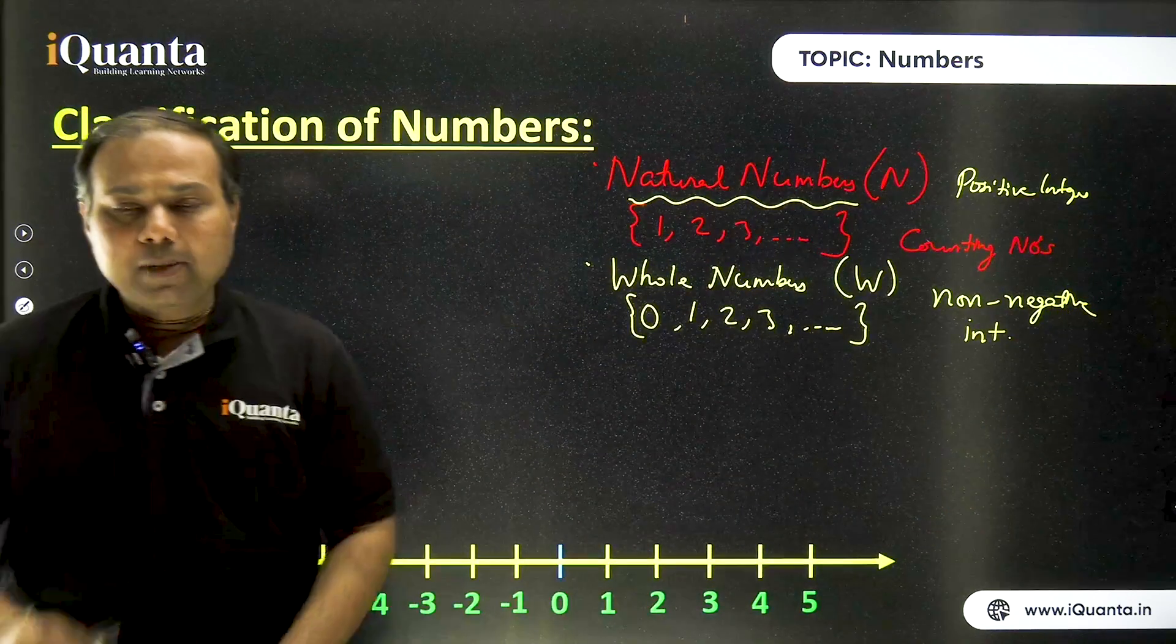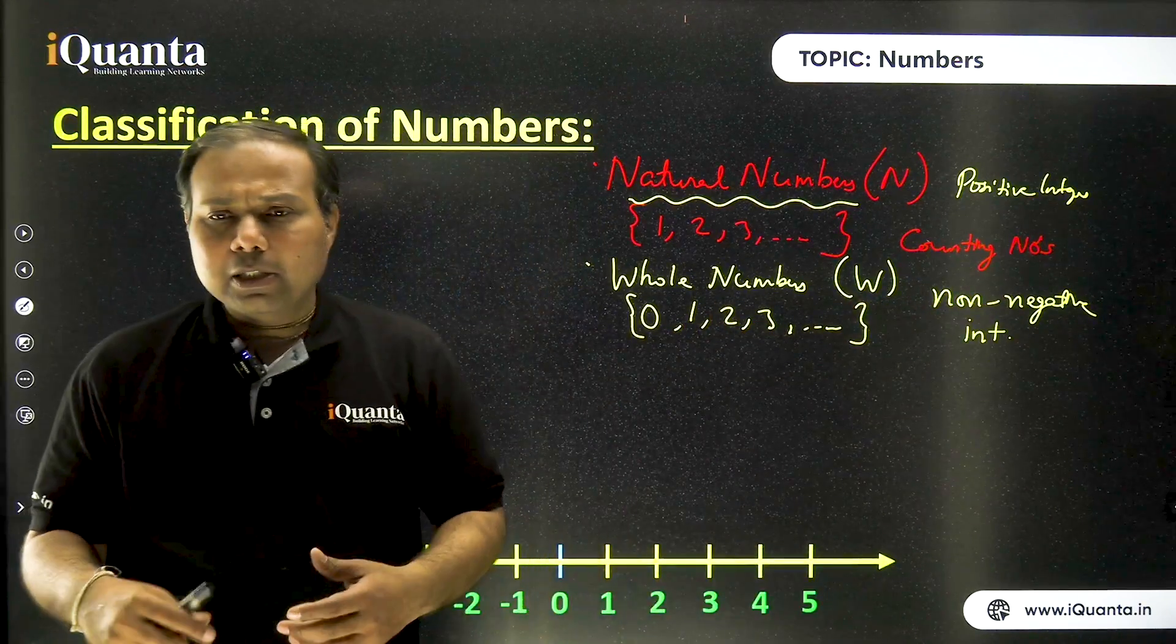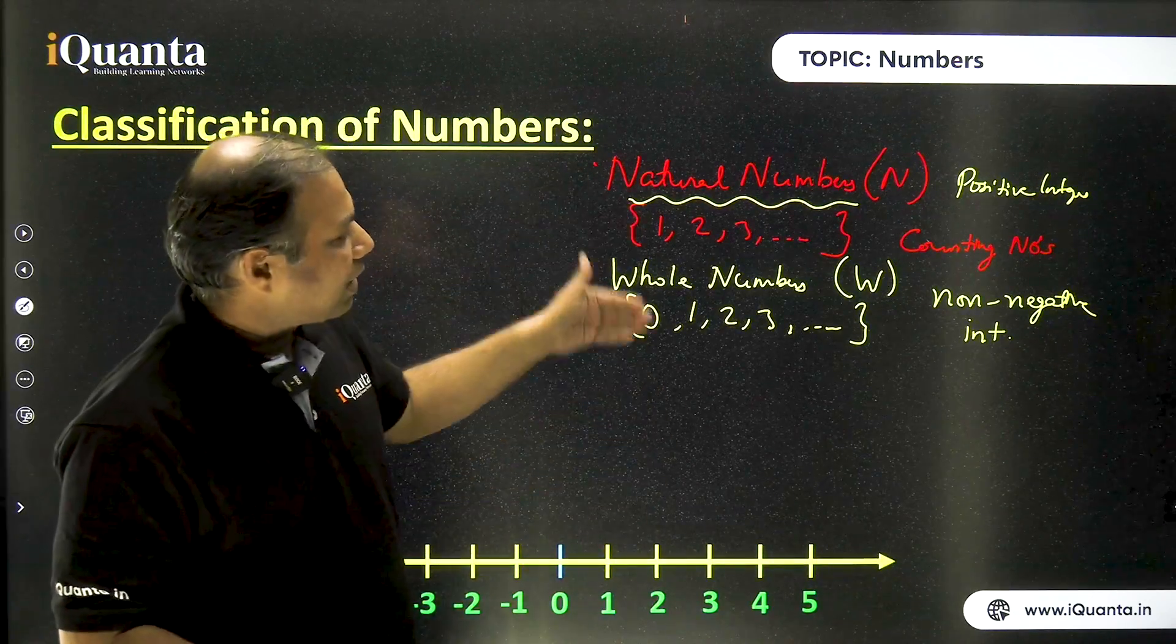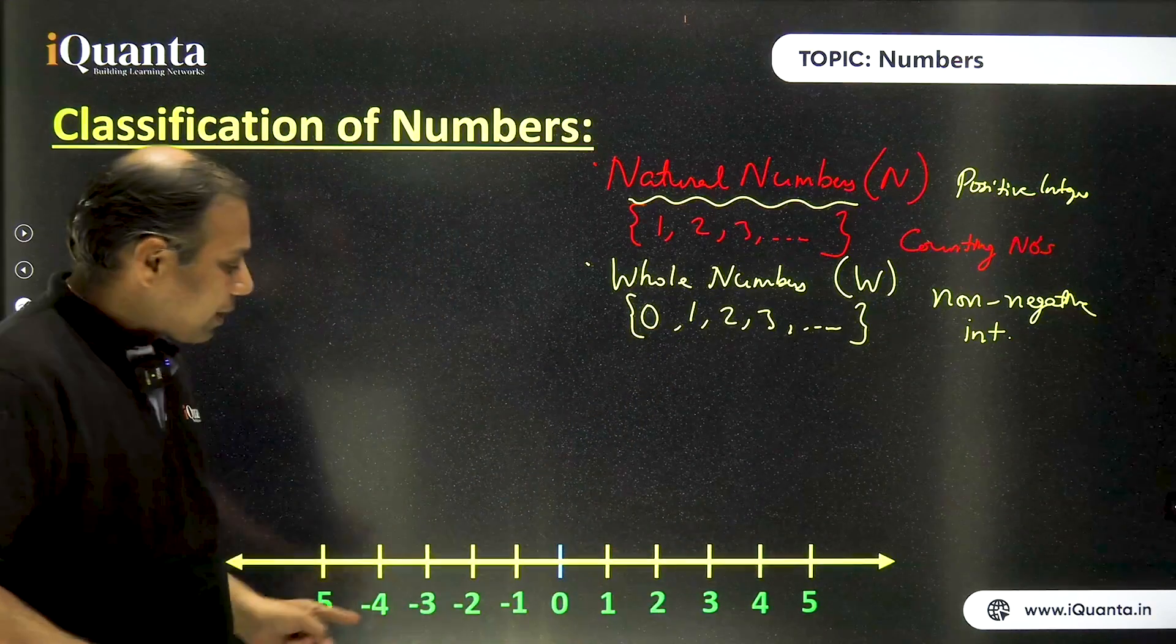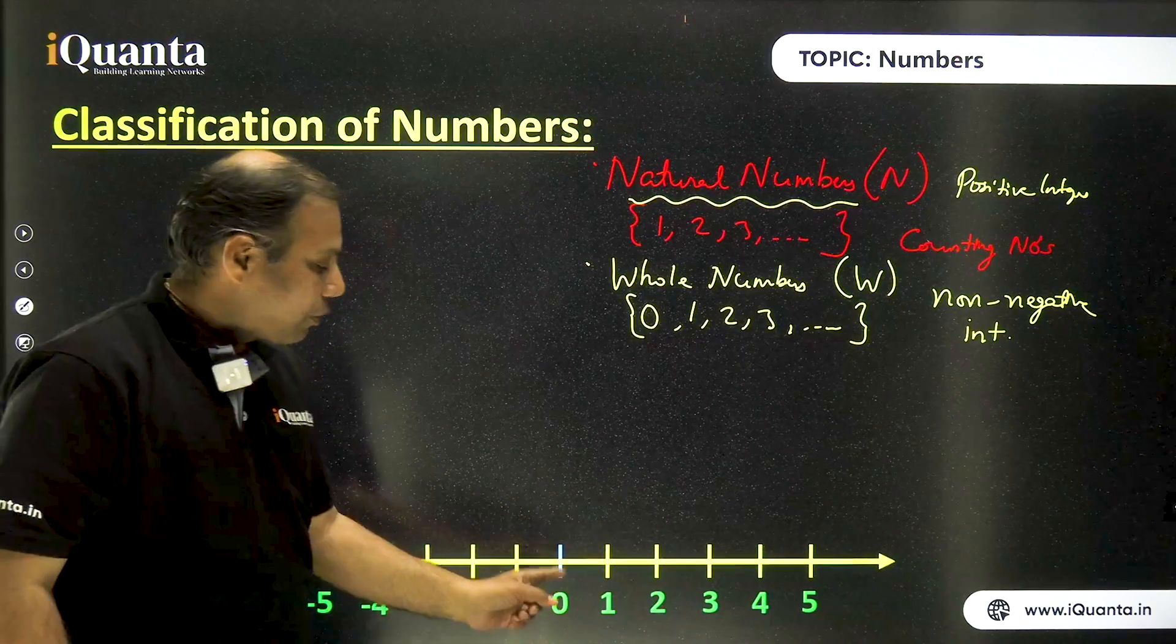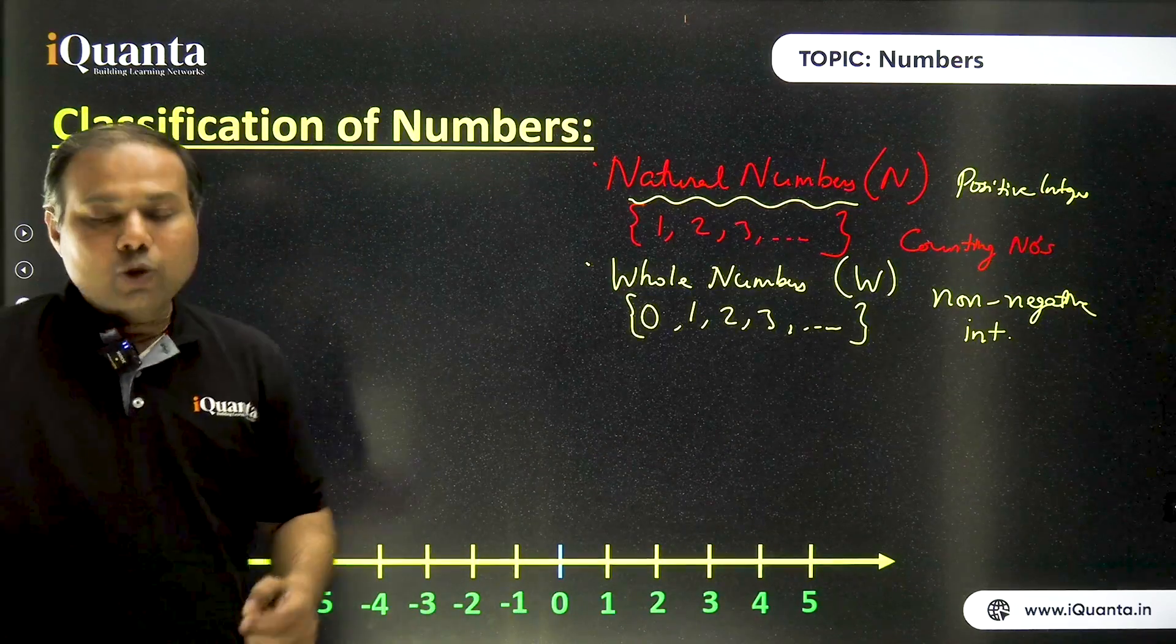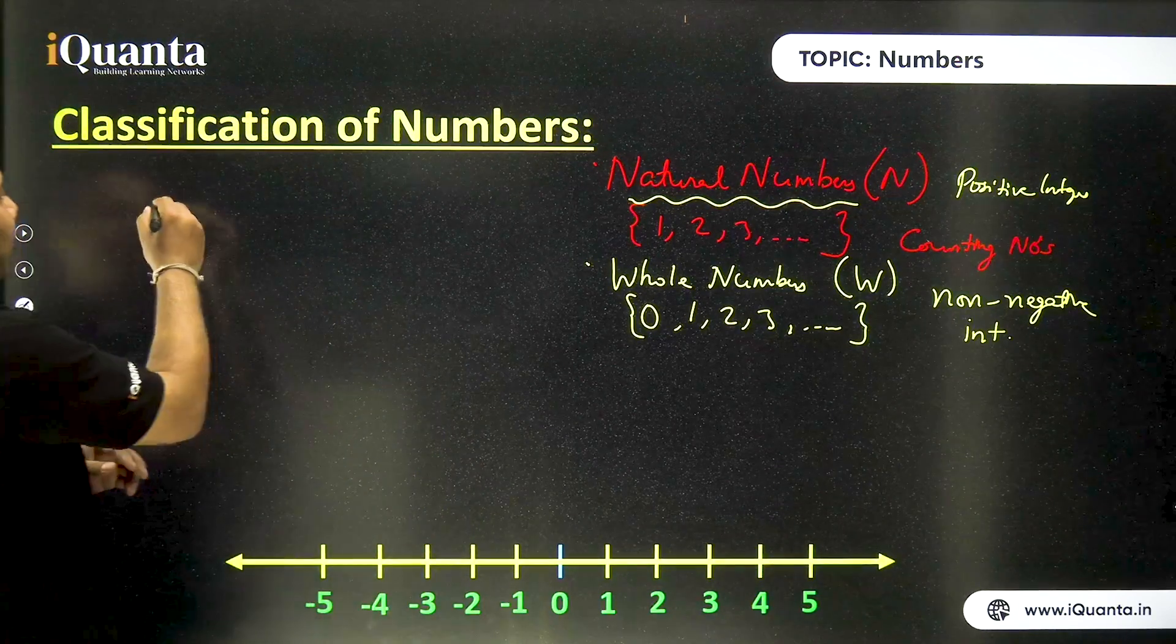Now here very important point is there to note that why I'm saying non-negative. Is it not that non-negative means positive? No. So there is slight difference and you can very easily find out the difference. The difference is of this number zero. Now see on this number line, we have zero and towards the right of zero, we are having all the positive numbers one, two, three, four and so on. And on the left side of zero, we are having all negative numbers.